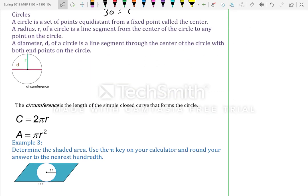Circles. A circle is a set of points equidistant from a fixed point called the center. A radius r of a circle is a line segment from the center of the circle to any point on the circle. A diameter d of a circle is a line segment through the center of the circle with both end points on the circle. The circumference, I don't have it on here, but you know the circumference is all the way around. The circumference is the length of the simple closed curves that form the circle. So, to find the circumference, it's 2πr. And to find the area, so circumference is the same thing as the perimeter. To find the area, it's πr².